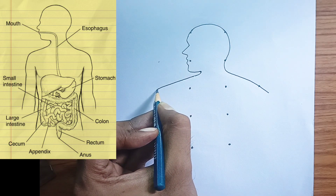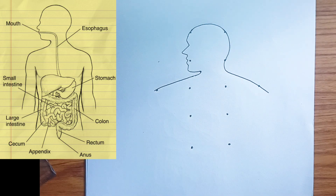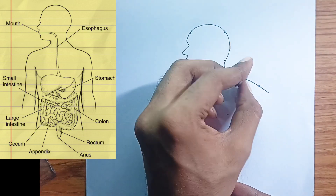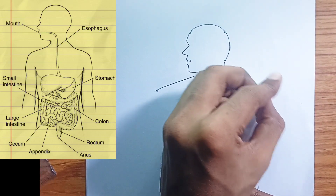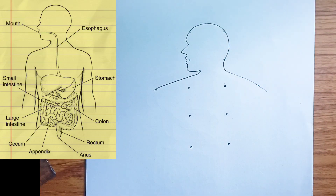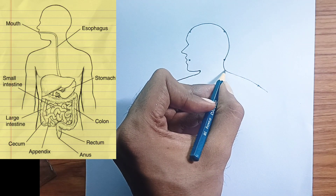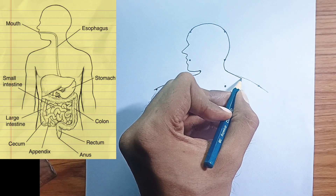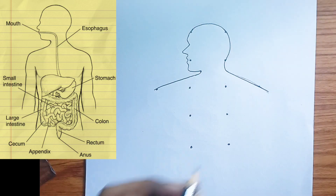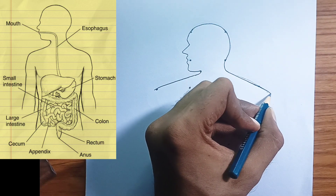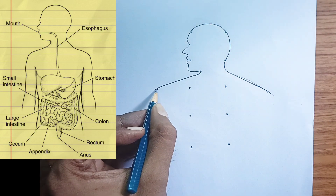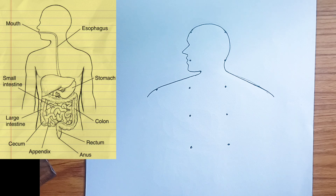Small intestine: a long, coiled tube where most chemical digestion and nutrient absorption occur. It's divided into three parts — the duodenum, jejunum, and ileum — though not individually labeled, this entire structure is the small intestine.